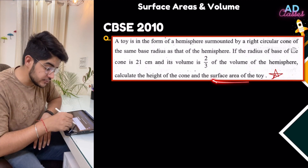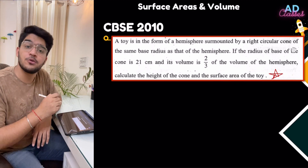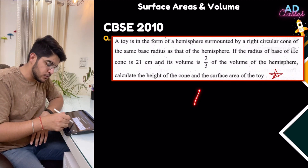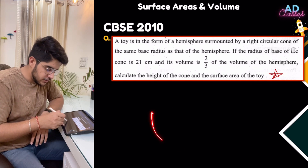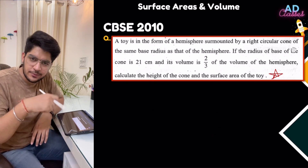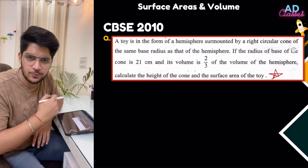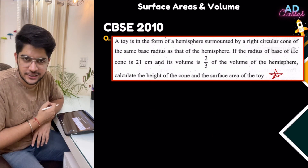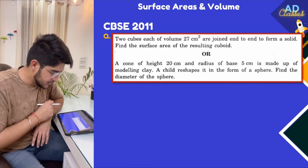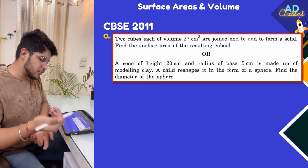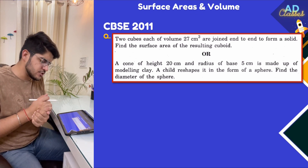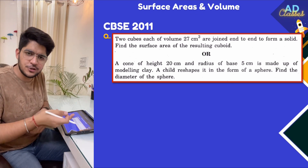For the surface area, you need the curved surface area of the cone and also the curved surface area of the hemisphere. The surface area comes to around 11,000. This was asked as a normal question with a choice, so it was a straightforward question in 2010.